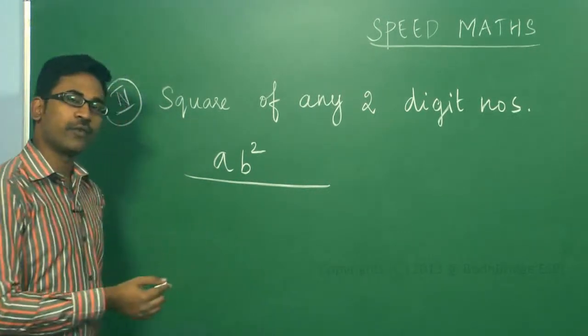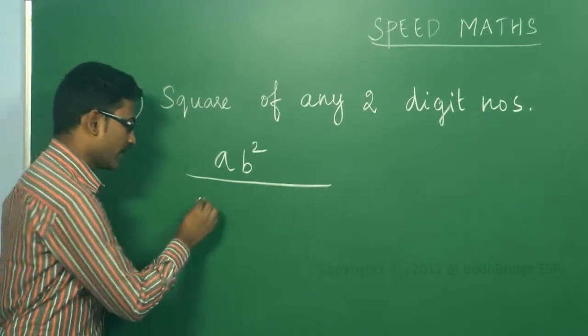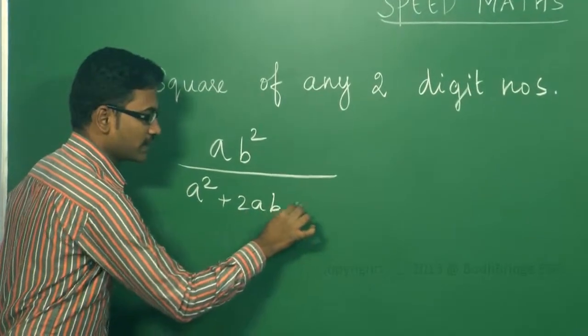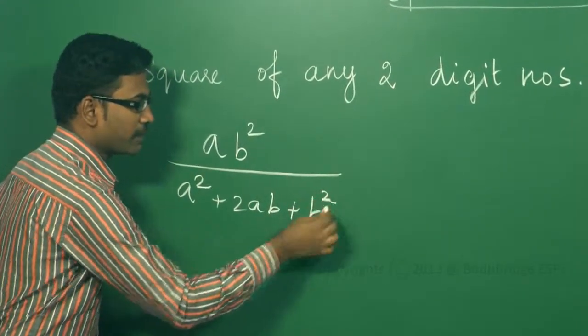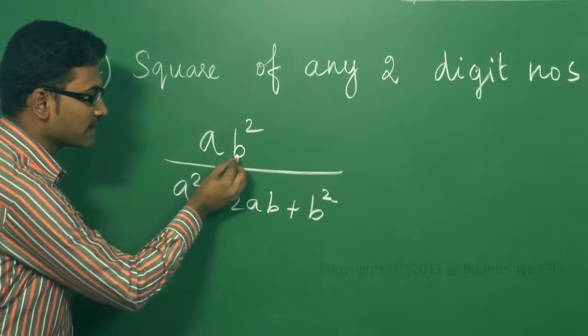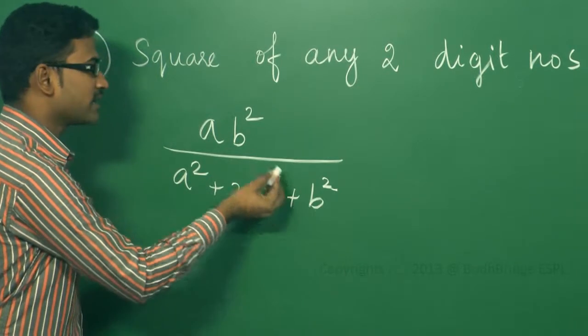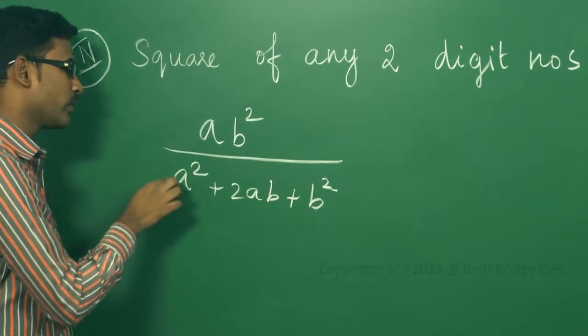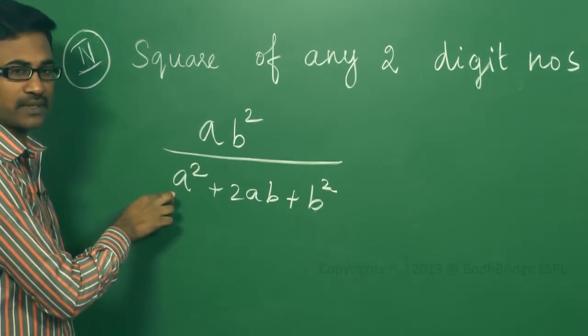Everybody knows the formula for (a+b) whole square: a² + 2ab + b². For remembering purposes, I am telling this formula. When one number is given, you have to square the unit digit. The second step is to multiply the two digits together and double it. The last step is to square the other digit which is present.